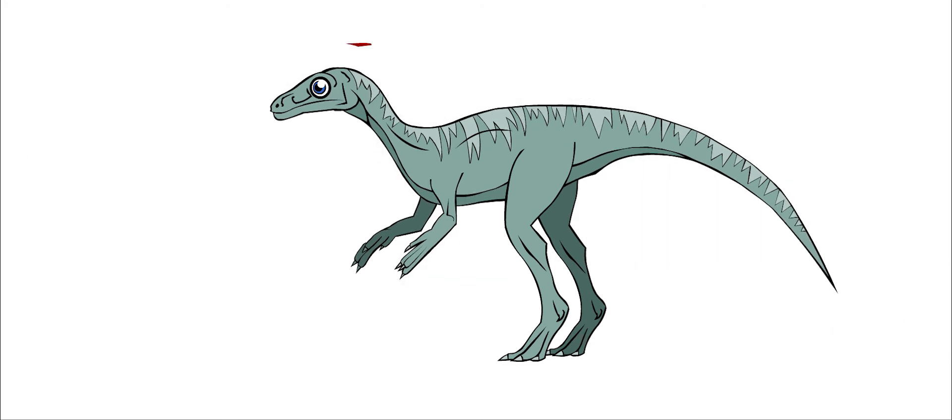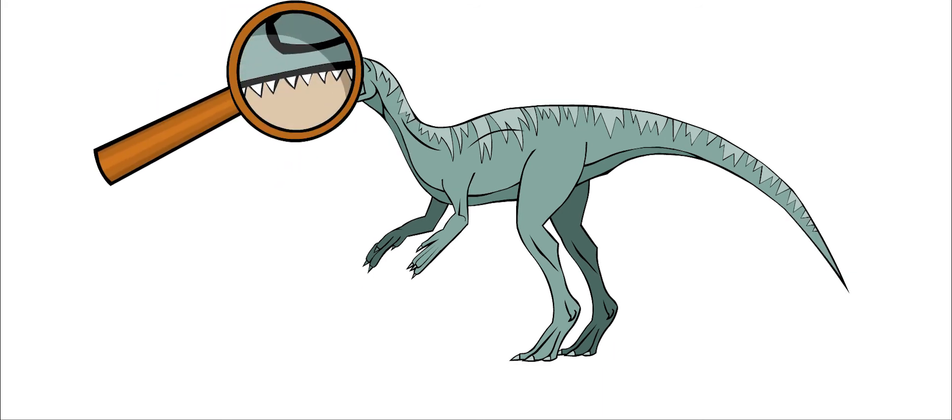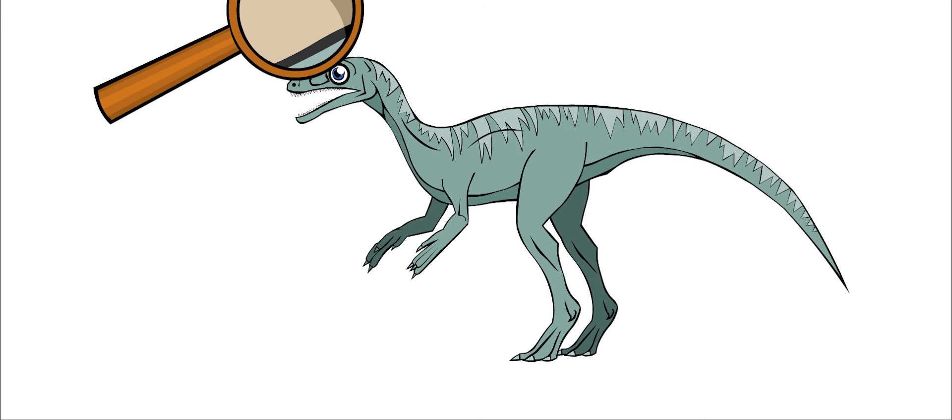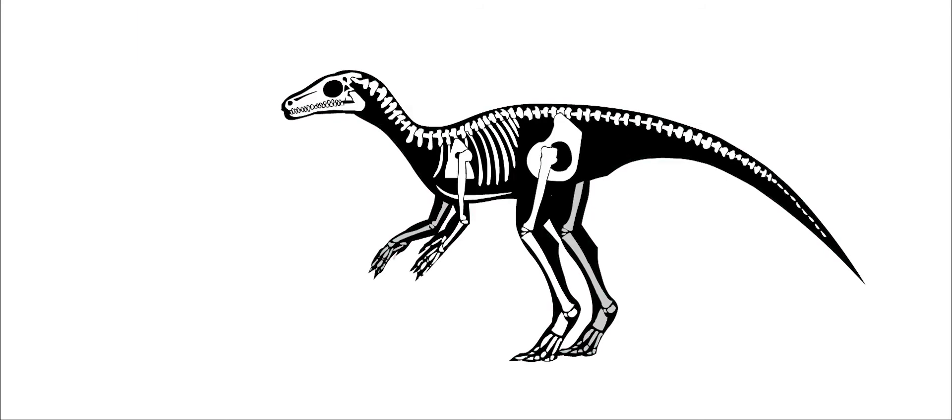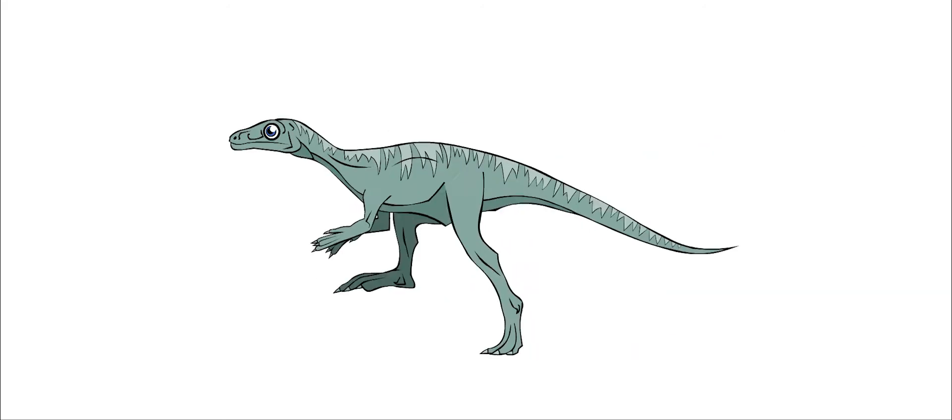It had a long snout and lots of small, sharp teeth. Like many smaller dinosaurs, Eoraptor had hollow bones. This made it very light and agile. This means it could turn and run quickly.